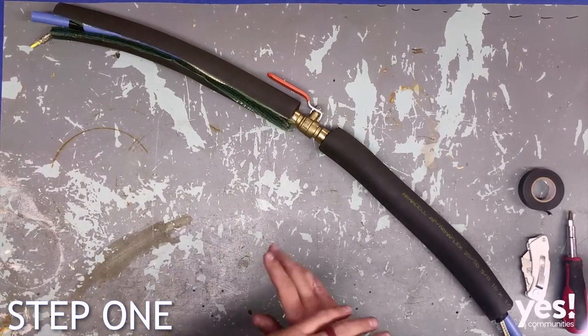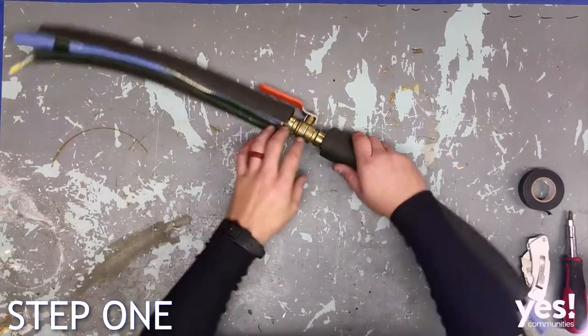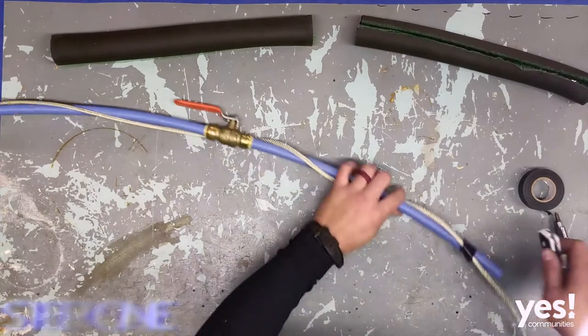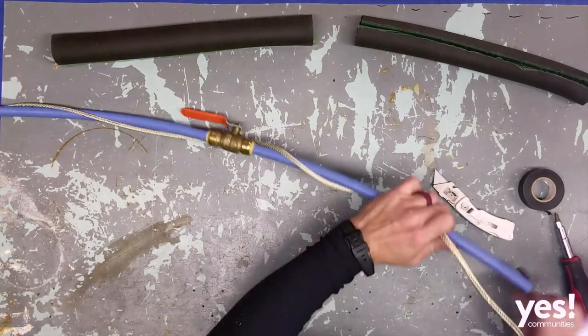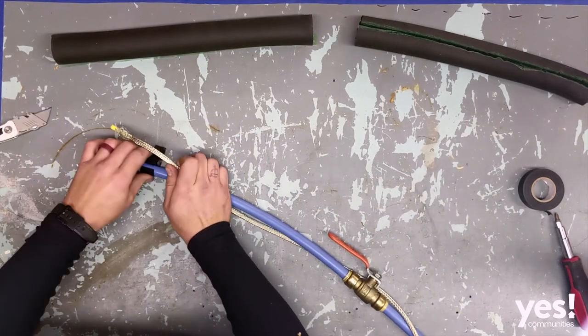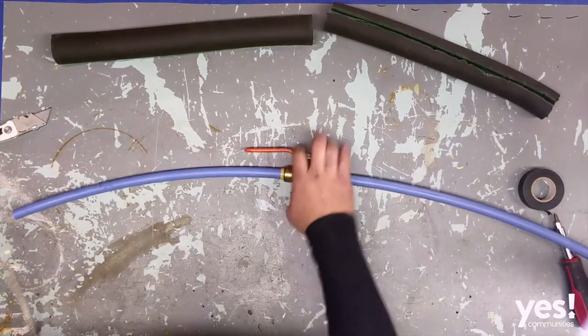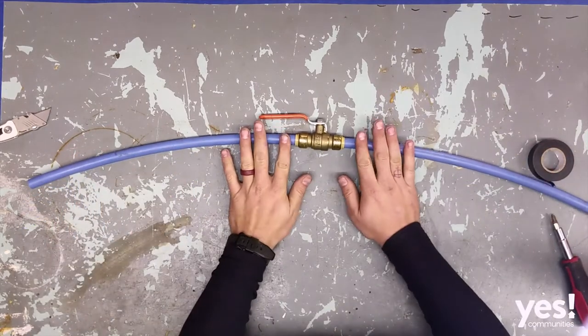Step one, we are simply going to be removing all of our old insulation and old heat tape from our water line. Get that out of there, clean up the water line, make sure there's no tape. You want to be left with bare exposed pipe. Get that old heat tape out of there, get that old insulation out of there. Nice and clean, you're ready to move on to step two.